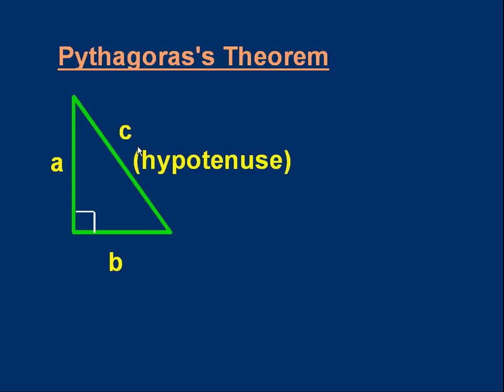OK, let's start with what I hope is some revision, Pythagoras' theorem. Right angle triangle, long side is called the hypotenuse, one opposite the 90 degrees.